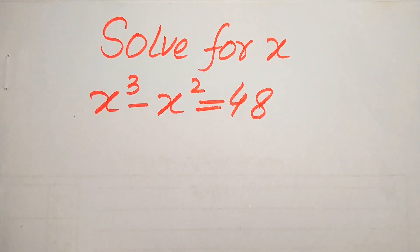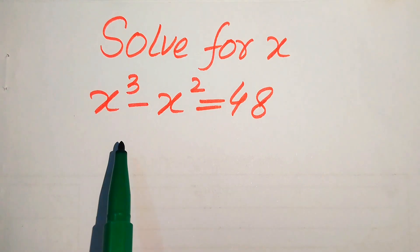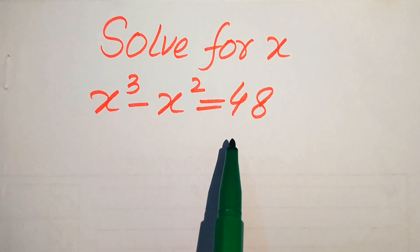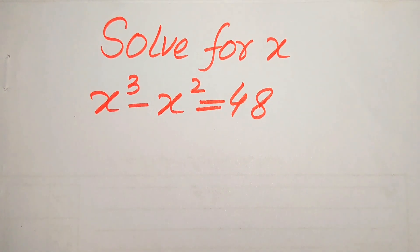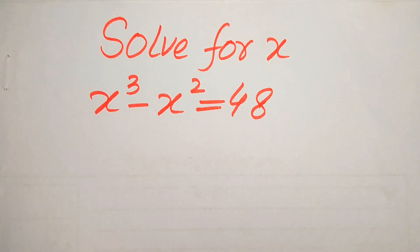Hello everyone. How to solve this problem for the values of x if we have x cubed minus x squared equals 48? We find all the roots of this equation. If you have any other method in mind, please don't hesitate to write it in the comment section.